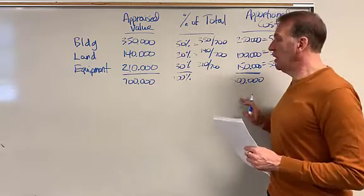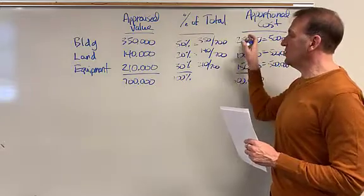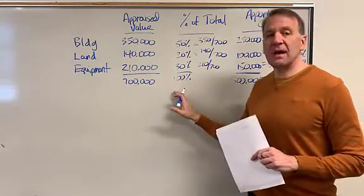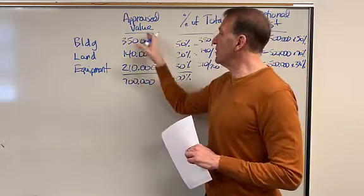All right. So we're paying $500,000. We need to allocate that $500,000 between our three assets. So we're going to do it based off of the relative market value. And in this case, we do have appraised value. So this needs to be given to us.